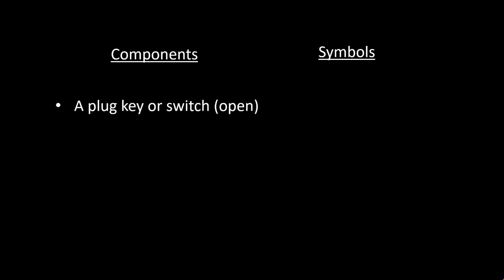A plug key or switch open. When plug key is open, no current flows through the circuit. A plug key or switch closed. When plug key is closed, current flows through the circuit.